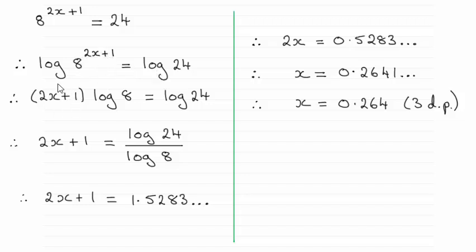With this logging both sides and then using the power rule, we bring that power out the front of log 8 in this case. So then we divide both sides by log 8, and that gives me 2x plus 1 then equals the log of 24 over the log of 8.